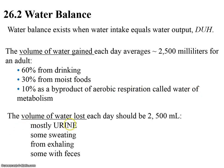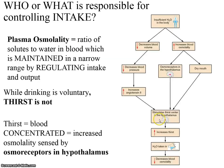The volume lost is mostly urine. Some in sweating, some in exhaling — because every time I exhale, I exhale carbon dioxide and water. And of course in the digestive system we lose some with feces. So if you're balanced, what's in equals what goes out — and that's not really profound.